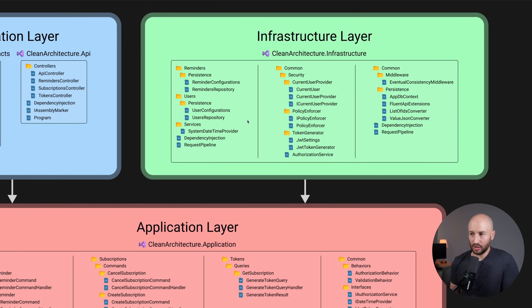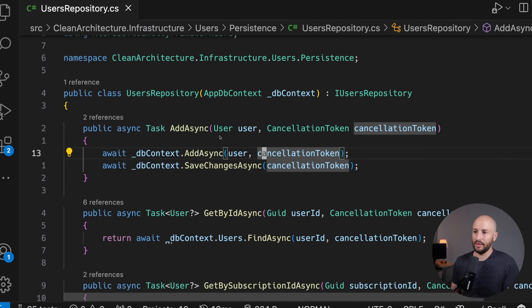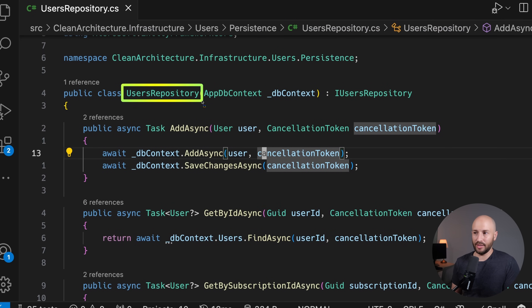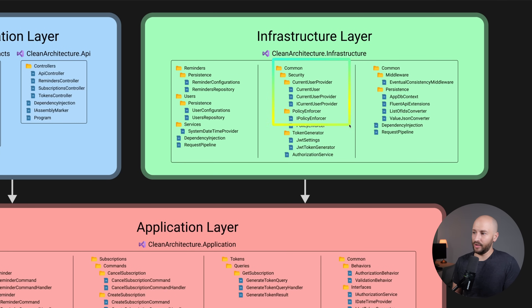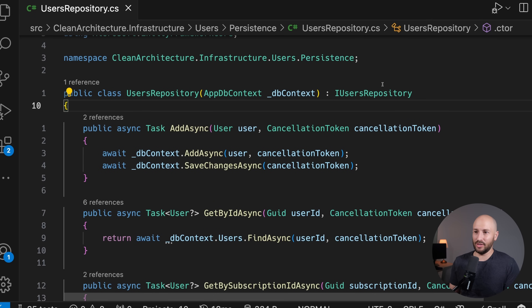Finally, in the infrastructure layer, the main things to focus on are the underlying repository implementations. Looking at the users repository, it uses the DB context under the hood to manipulate the database. Alongside that, we have all the identity and authorization concerns, as well as dependency injection and eventual consistency topics that are out of scope for this video — but you can look at the source code and check out the courses to learn more.